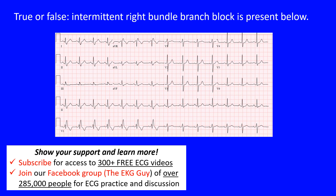Here we have a true or false statement: intermittent right bundle branch block is present. What we have is a 12-lead ECG and you have to know a few things. First, you need to know the right bundle branch block pattern. Intermittent means it shows up but isn't completely present throughout - in some parts of the ECG you see right bundle branch block and in others you don't. So we're looking for a right bundle branch block that doesn't persist from beginning to end.